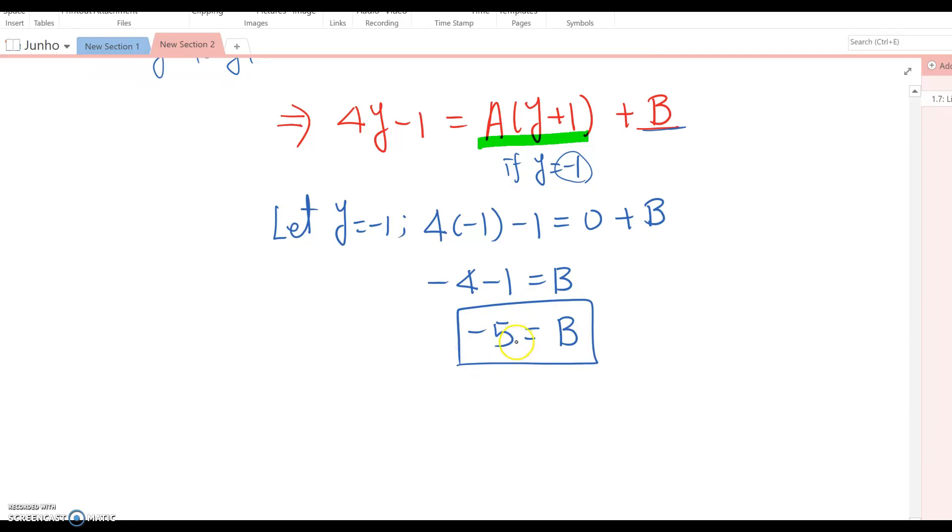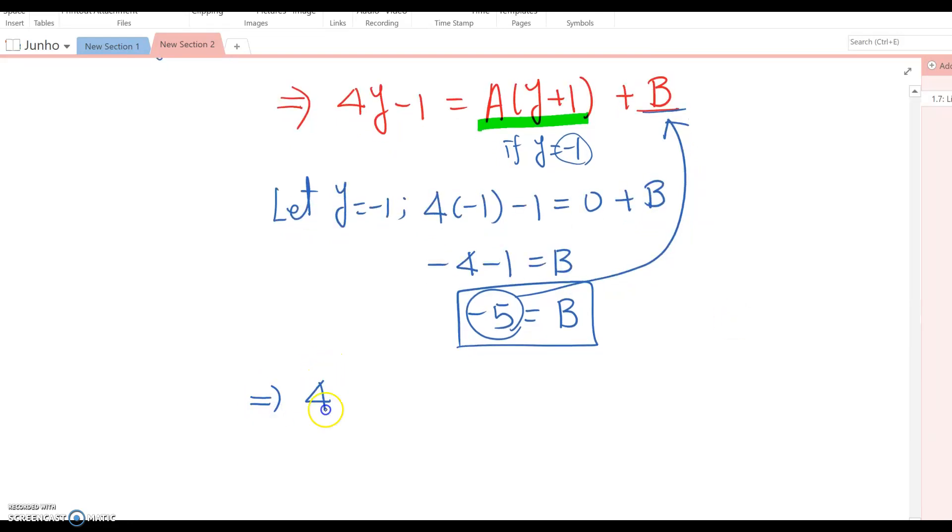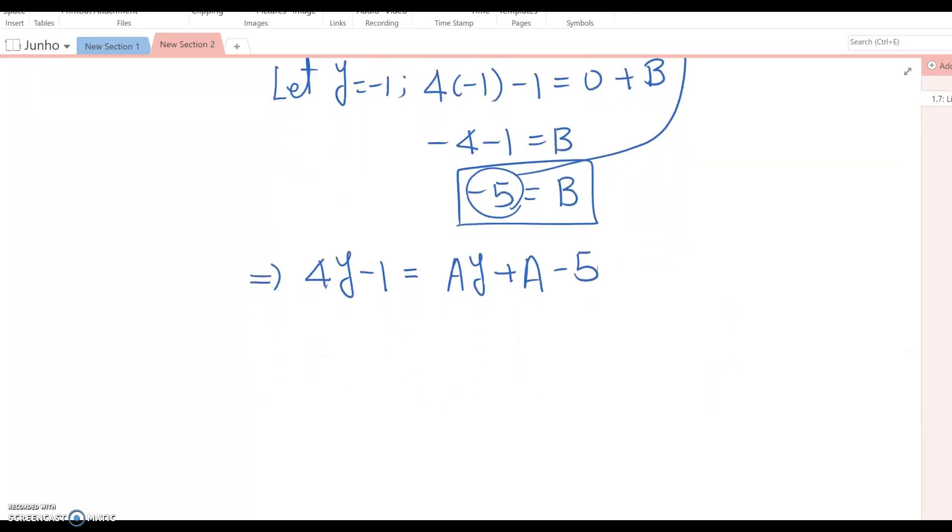Now we replace -5 for B and expand to find the value for A. This becomes 4y - 1 = Ay + A - 5. Comparing coefficients, 4 = A. So we found A = 4 and B = -5.